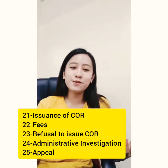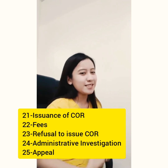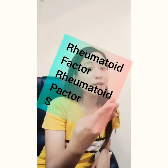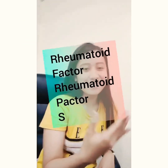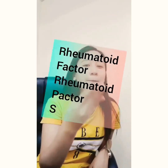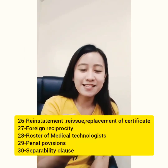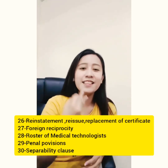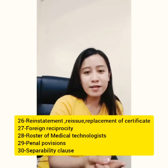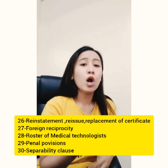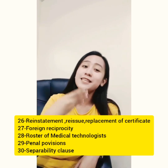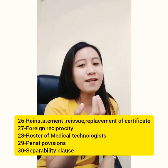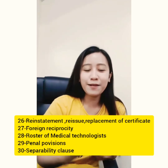For sections 26 to 30, the mnemonic is 'Rheumatoid Factors' — letters R, F, R, P, S. Section 26 (R) is Reinstatement, Reissue, or Replacement of Certificate; Section 27 (F) is Foreign Reciprocity; Section 28 (R) is Roaster of Medical Technologists; Section 29 (P) is Penal Provisions; and Section 30 (S) is Separability Clause.